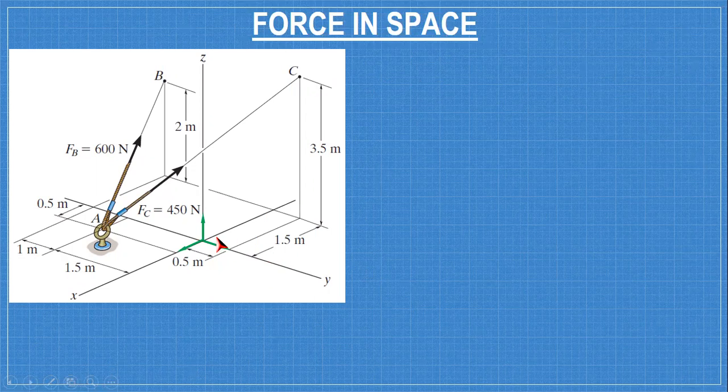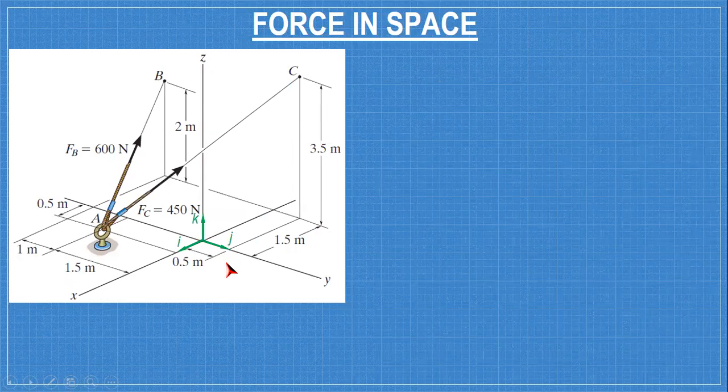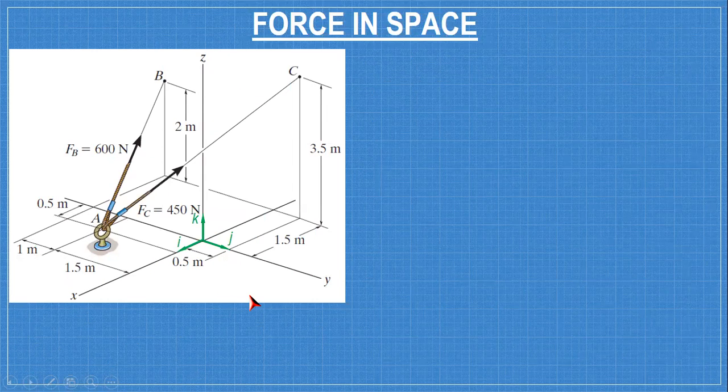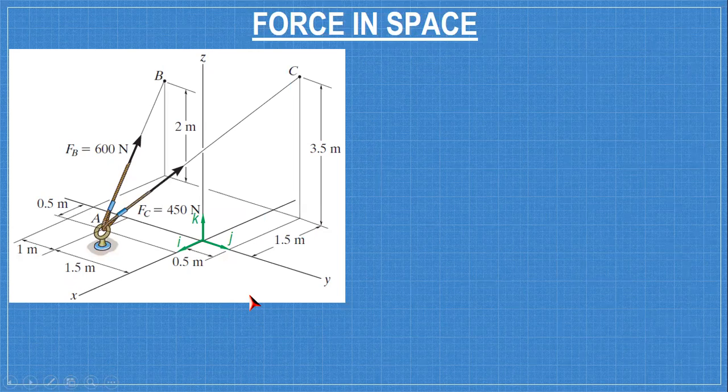Again, your guide for this problem, the orientation of the axis is different. X is here, Y is here and Z here. So the unit vectors, I should be at X so I is here, J is here, and K is here. So you have to be careful with the orientation of the axes, where X, Y and Z are located.